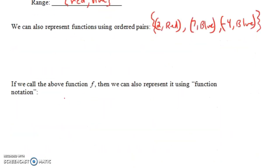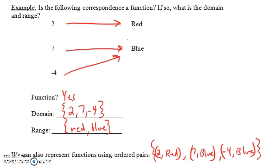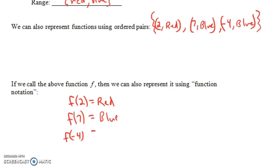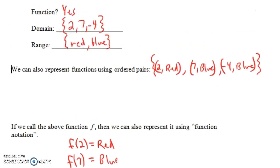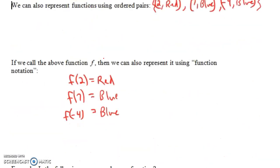We could also call this function f and represent it using function notation. The fact that 2 corresponds to red — we could draw it with an arrow, write an ordered pair, or say that f(2) is red. And f(7) would be blue, and f(-4) is blue. These are three different ways of representing this function. Function notation is where we give our function a name, calling it f. All three representations give the exact same information.